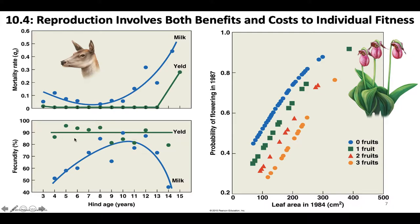Looking at percent fecundity — their likelihood to give birth after that initial measure — it is really high and consistent for yeld hinds because they've never given birth before. For milk hinds, fecundity can be really low after that initial calving event, and then it can go back up but then drop really drastically. So giving birth is very energetically costly to an individual organism.